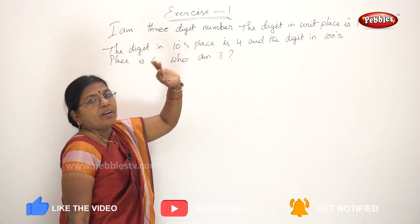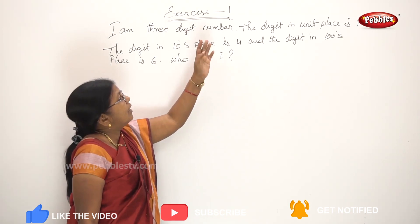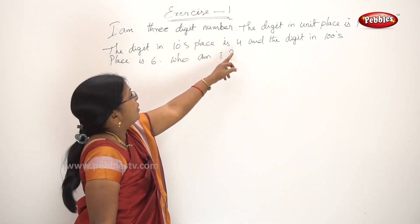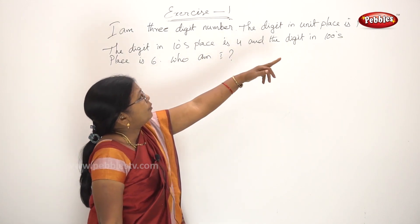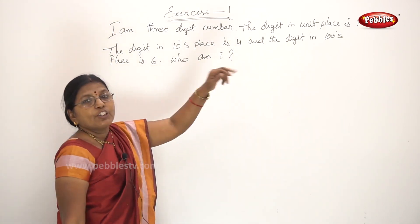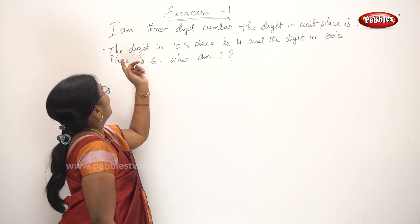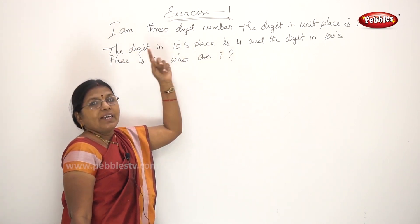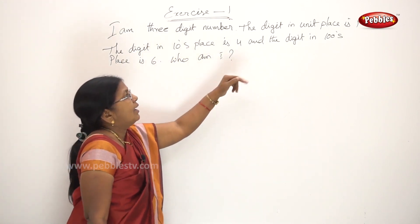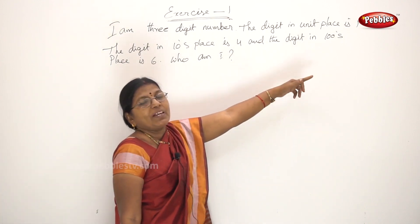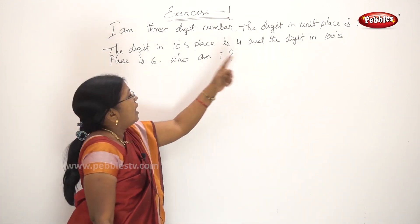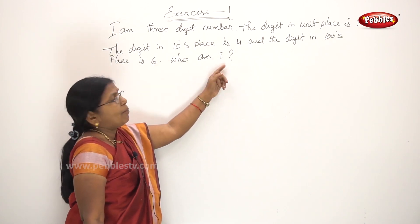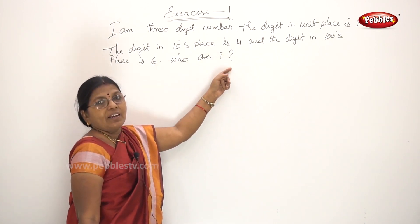I am a three-digit number. The digit in the units place is one. The digit in the tens place is four. The digit in the hundreds place is six. Who am I?